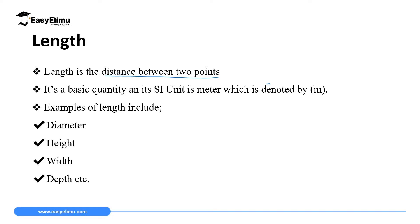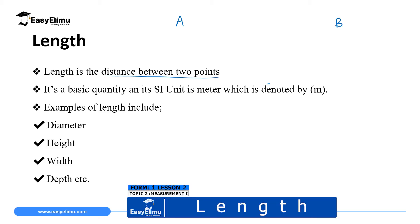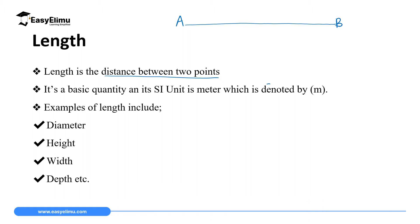Length is defined as the distance between two points. For example, if you want to measure the distance between point A and point B, you take a measuring instrument and measure that distance — the result you obtain is an example of length. Another example is measuring the length of your textbook or exercise book. Length is a basic quantity, meaning it cannot be obtained from other physical quantities, and its SI unit is the meter, denoted by small 'm'.